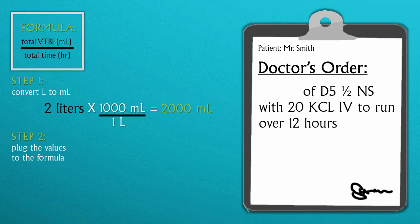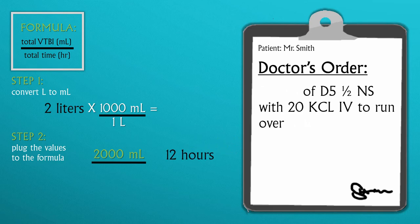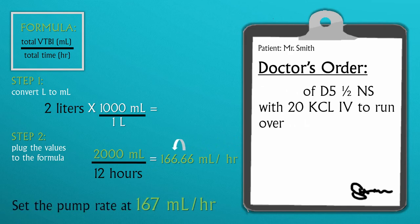Two thousand milliliters is your total volume to be infused over 12 hours, which is the total infusion time. You should get 166.66 milliliters. Since it is an infusion, we follow the rules of rounding and round up to the next whole number, which is 167 milliliters per hour.